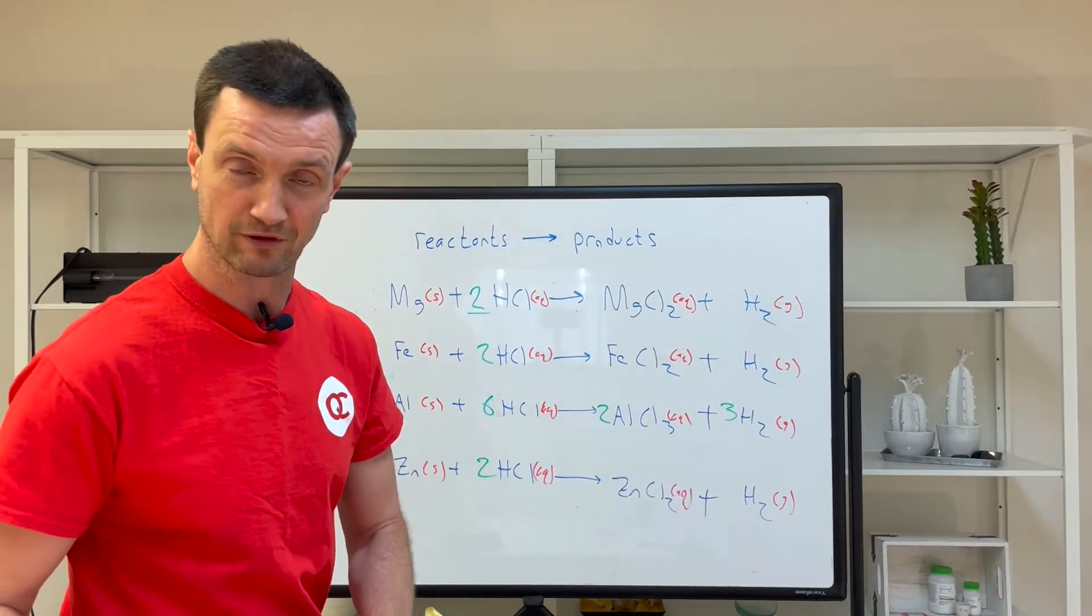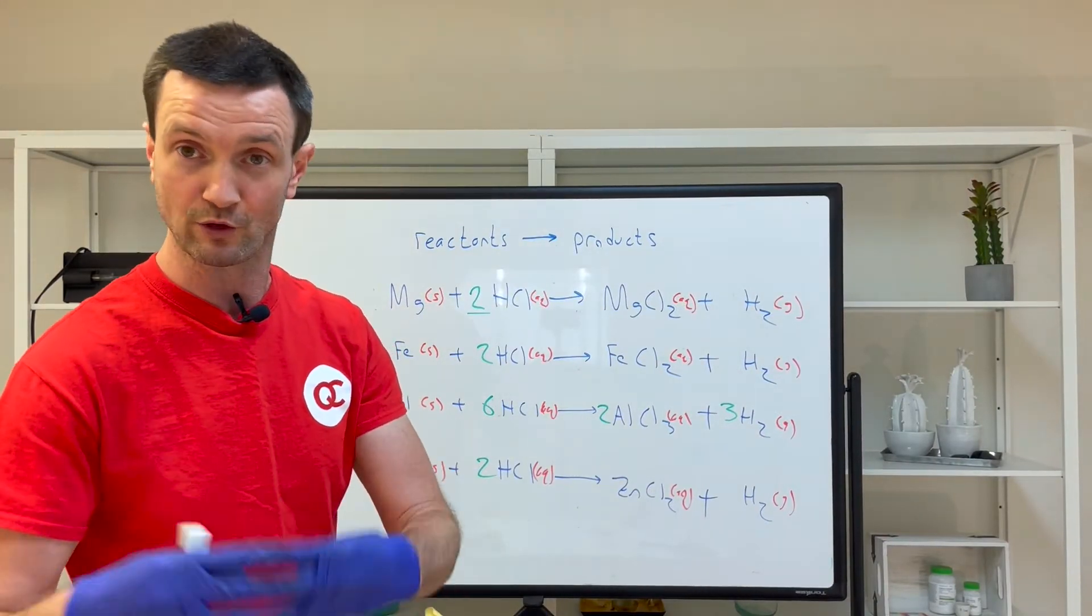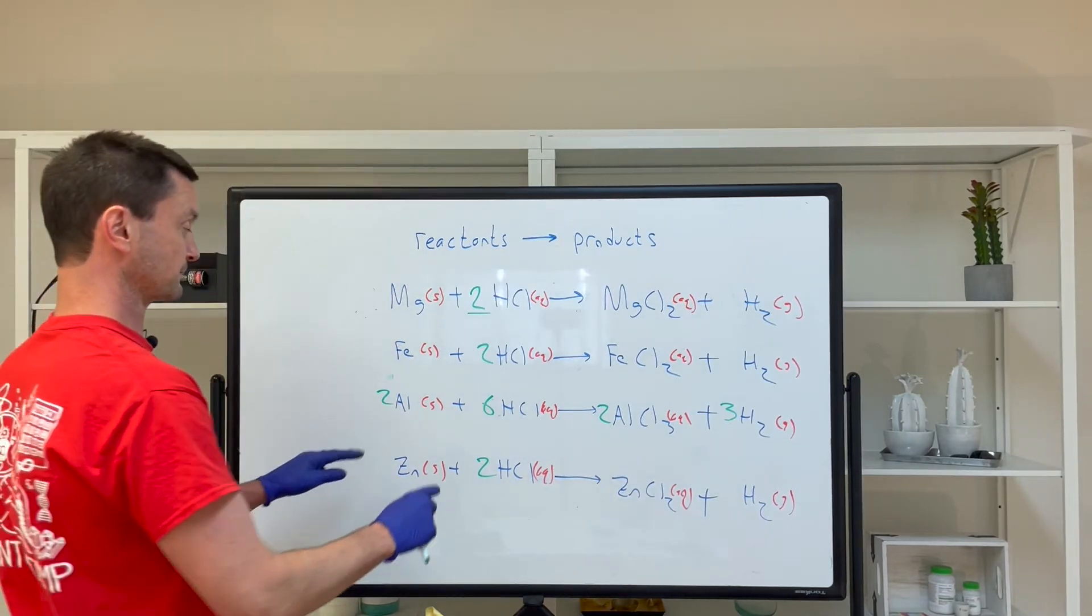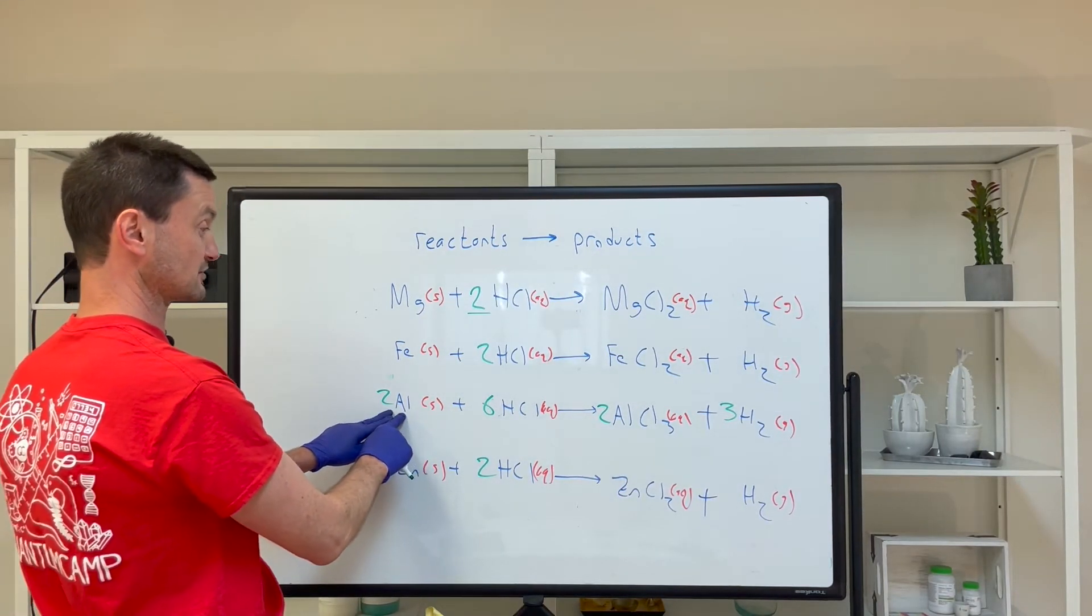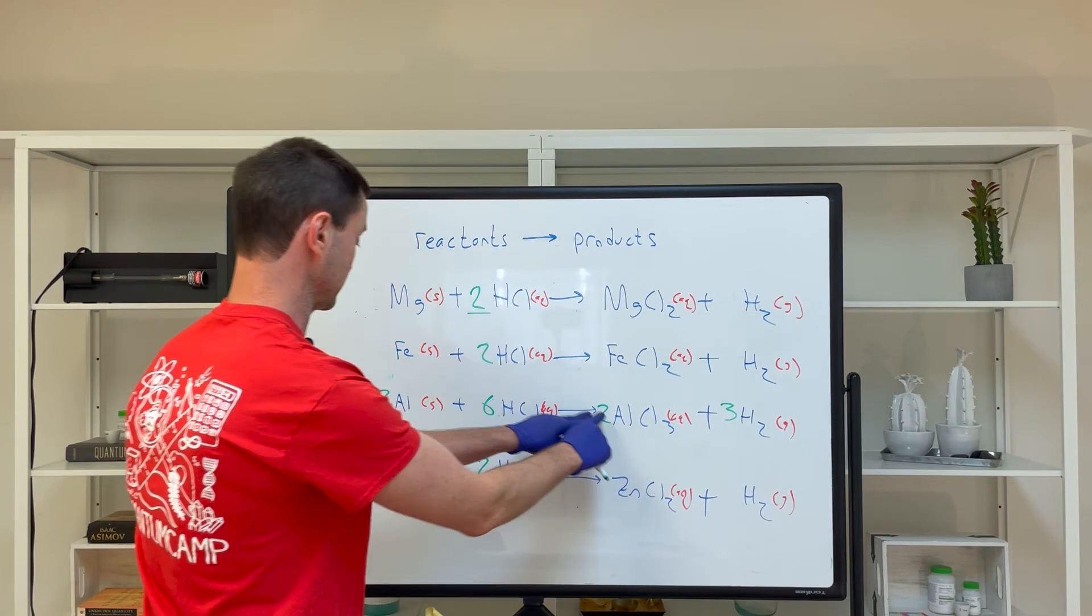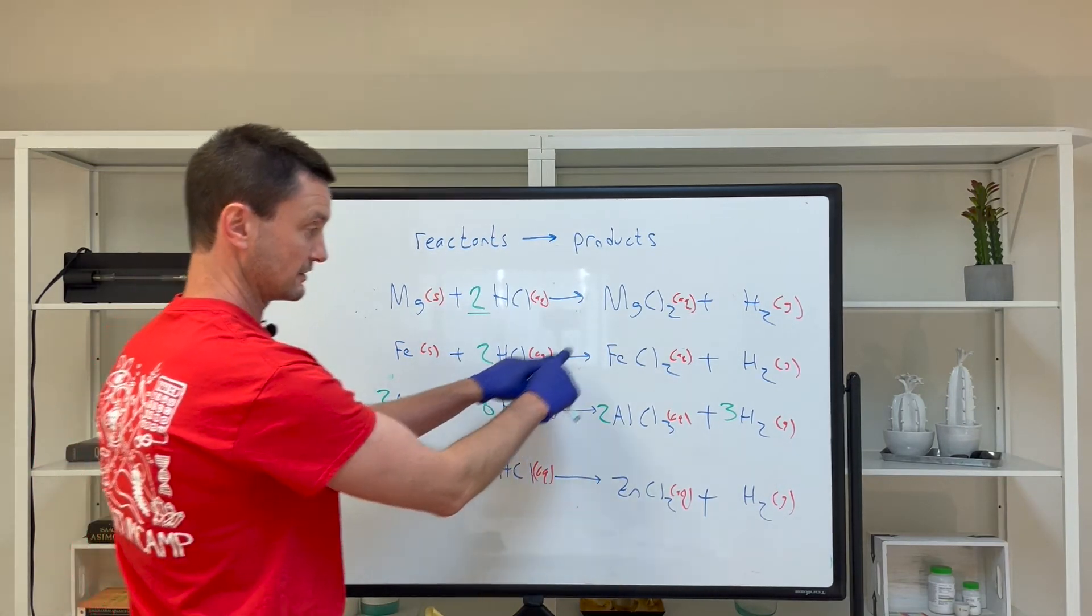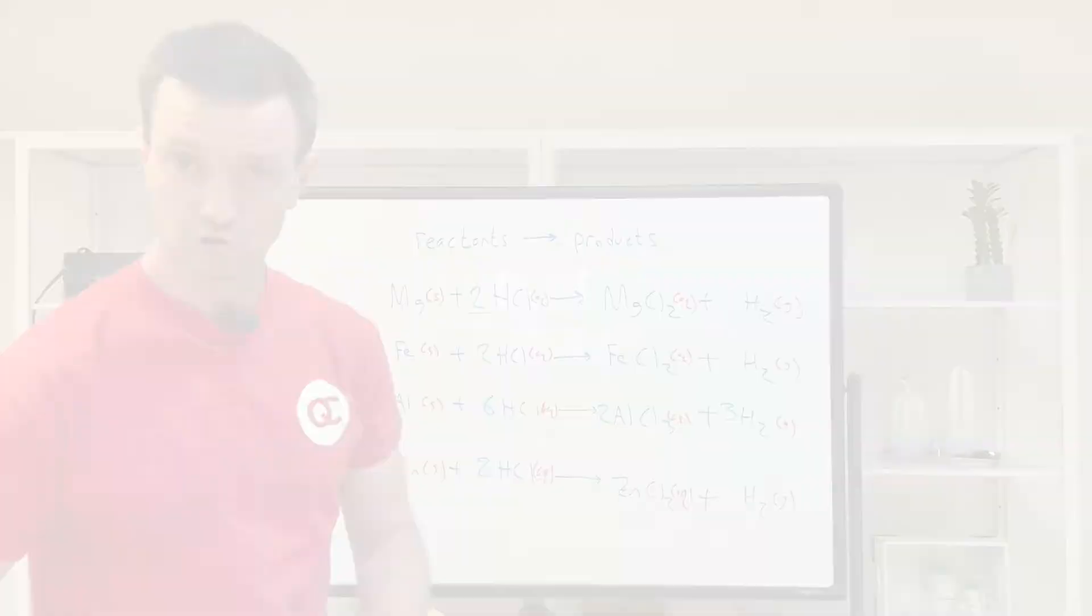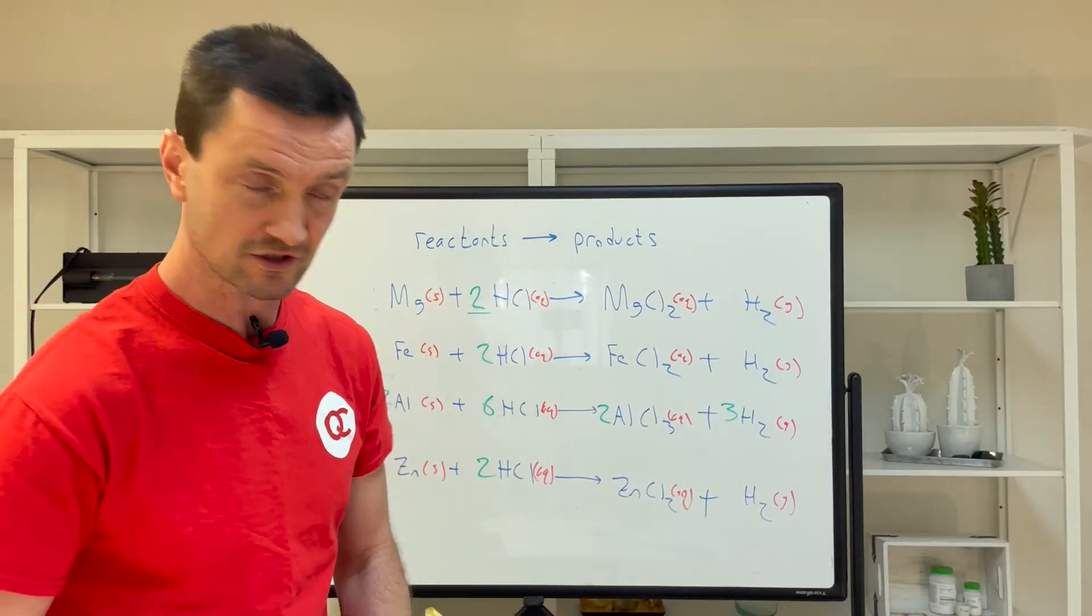That was a lot of back and forth. Let's check. I always recommend checking after you balance. Two aluminum atoms here, two here. Six hydrogen atoms here, six here. Six chlorines here, six here. We've balanced all three chemical reactions.